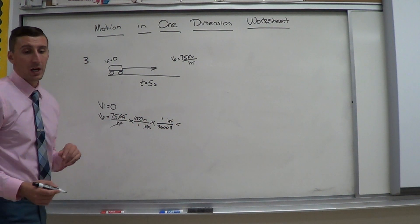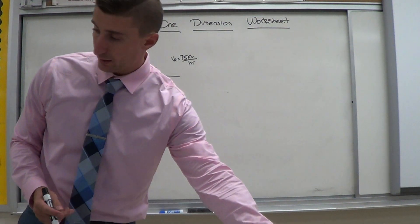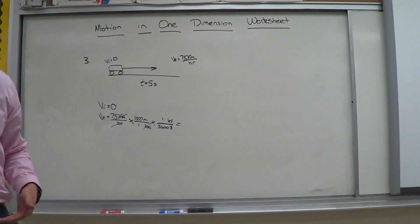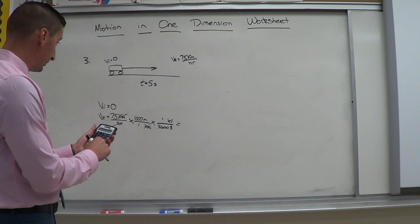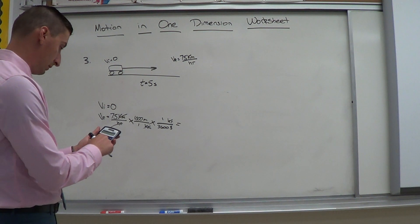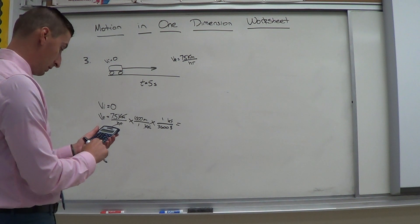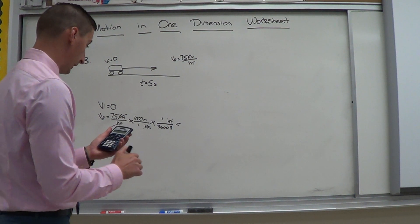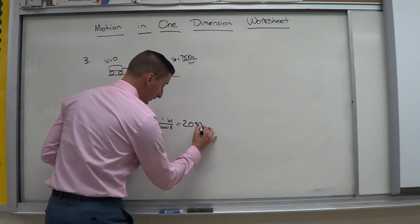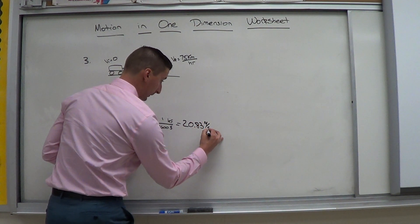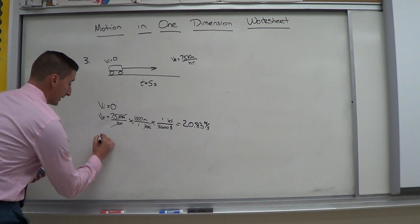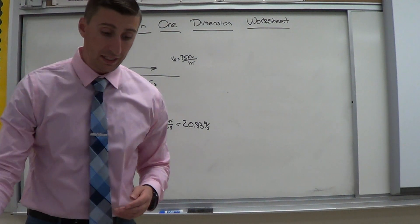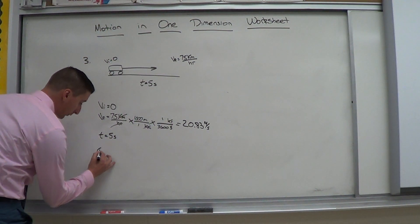And I get 75 times 1,000 divided by 3,600. I get 20.83. And that's meters per second. And it gives me that it's in five seconds. So time is five seconds. I'm looking for what is the acceleration of the car. So I'm looking for A.